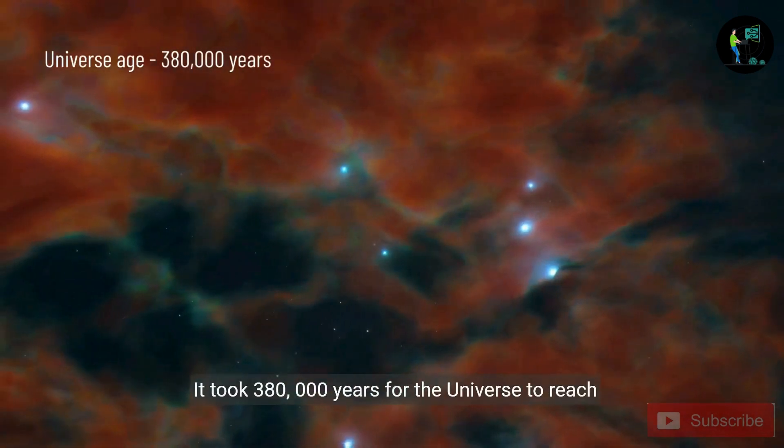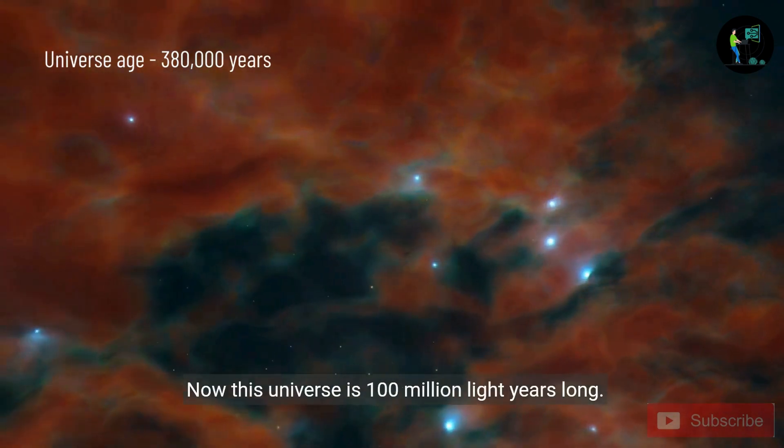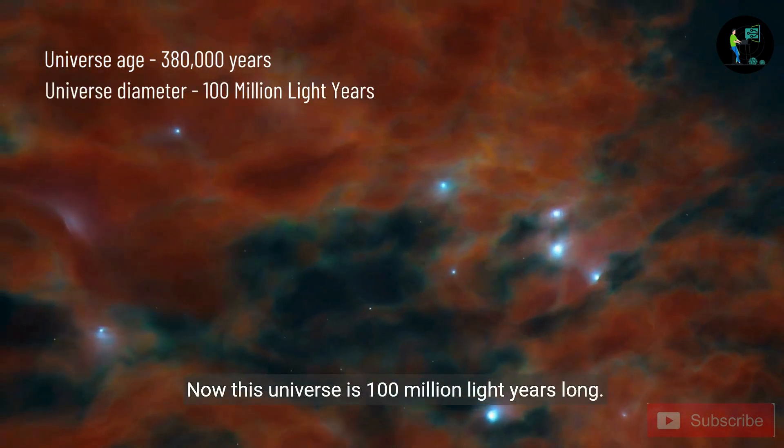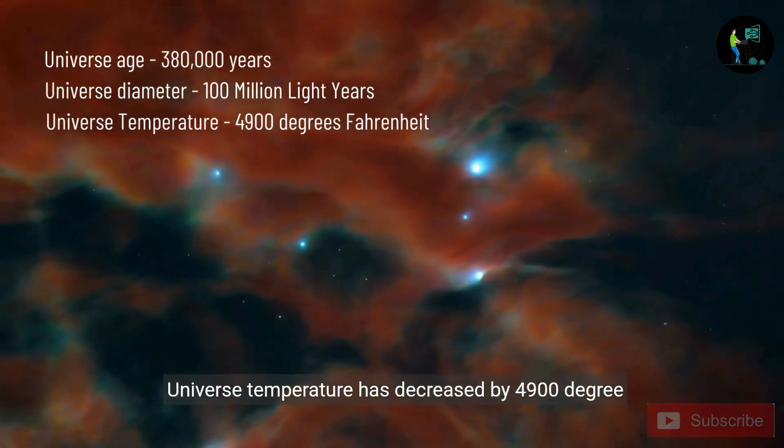It took 380,000 years for the universe to reach this stage. Now this universe is 100 million light years long. Universe temperature has decreased by 4,900 degree Fahrenheit.